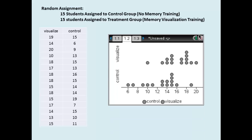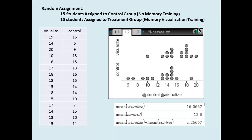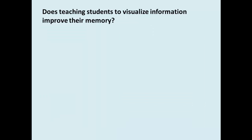The results are in the table at left. At right are dot plots comparing the two groups with summary statistics below. The mean for the group that was given the visualizing instructions was about a little over sixteen points, and the mean of the control group was twelve point eight points, and the difference in means between the two groups was about three point two seven points.